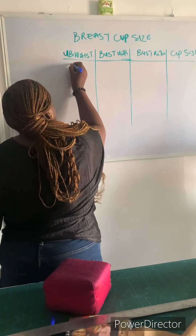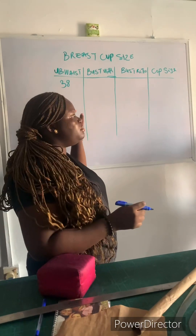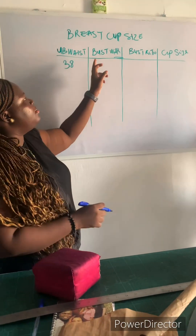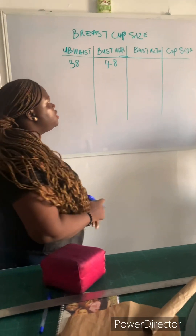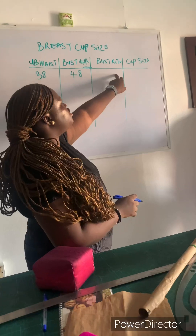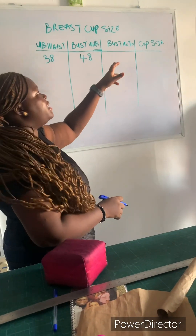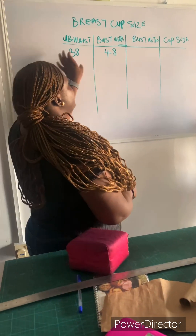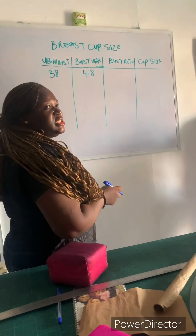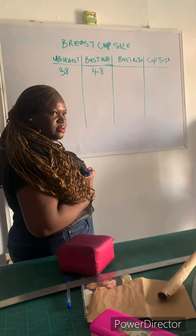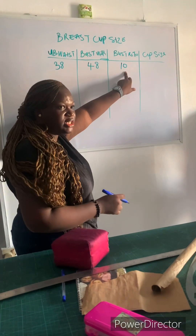My under bust measurement is 38. My bust measurement is also 38 — wait, my bust weight is 48. My bust ratio is bust weight minus under bust. So out of this 48, only 38 is my waist; the remaining 10 is for my breast. My bust ratio is 10.